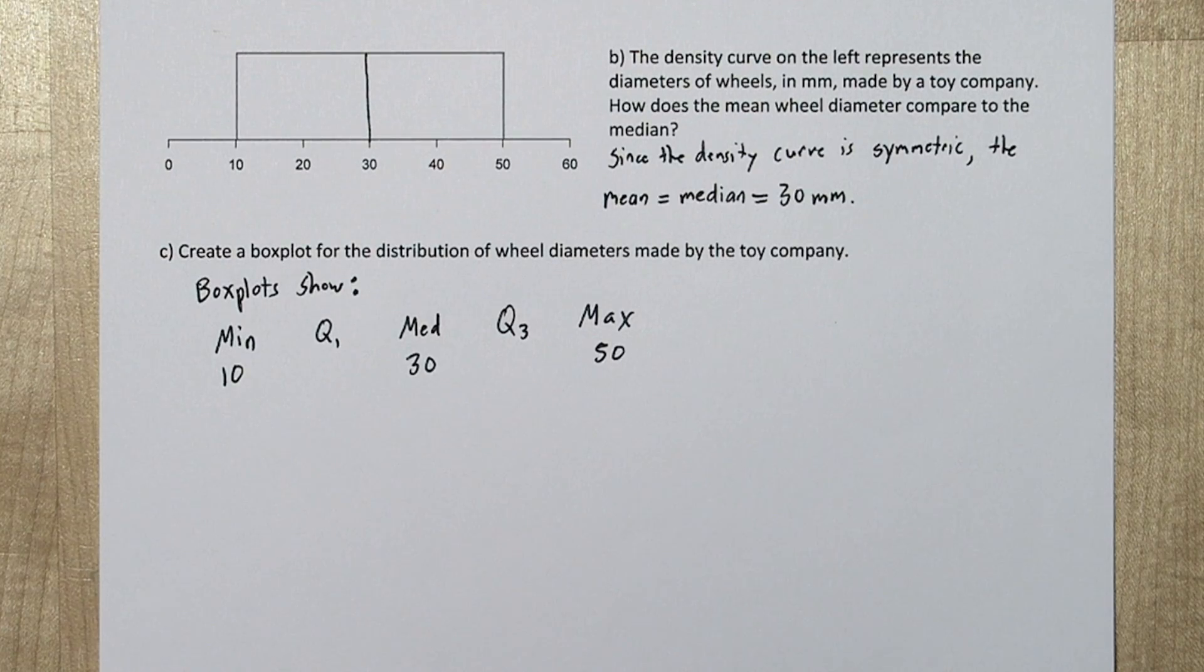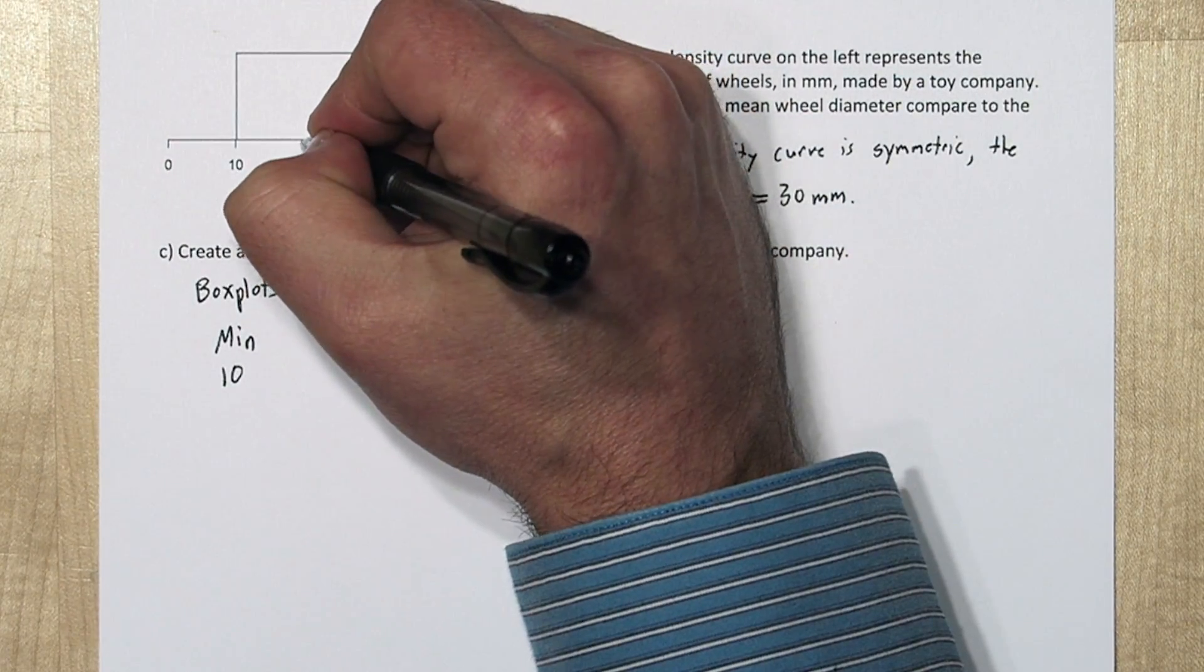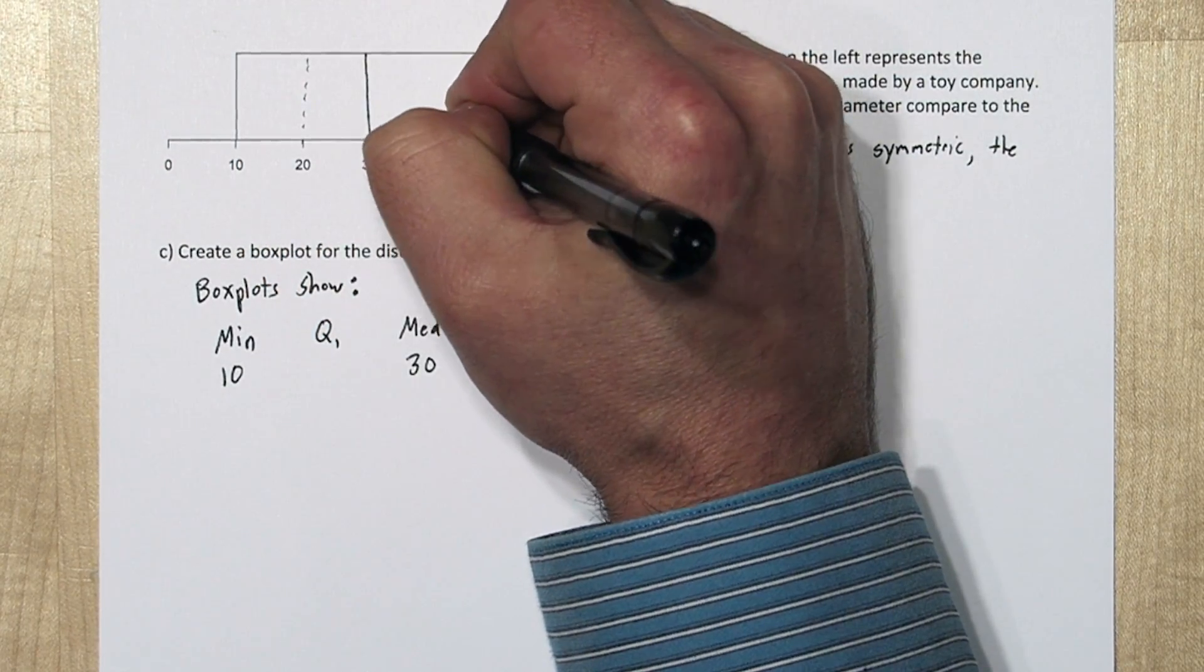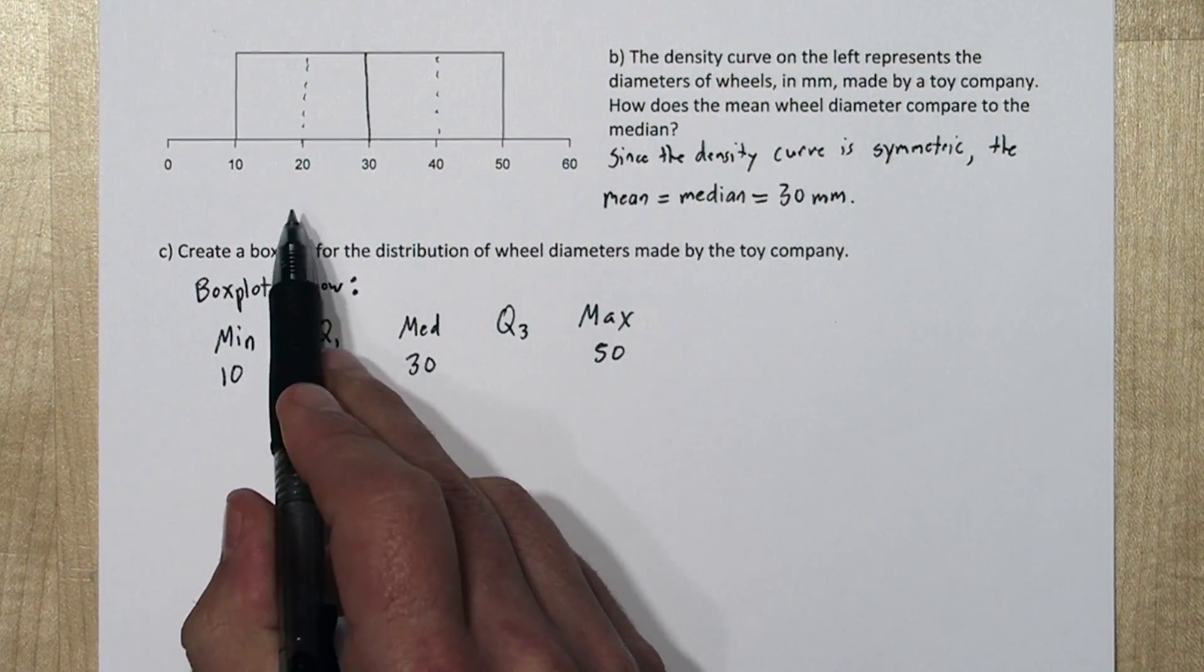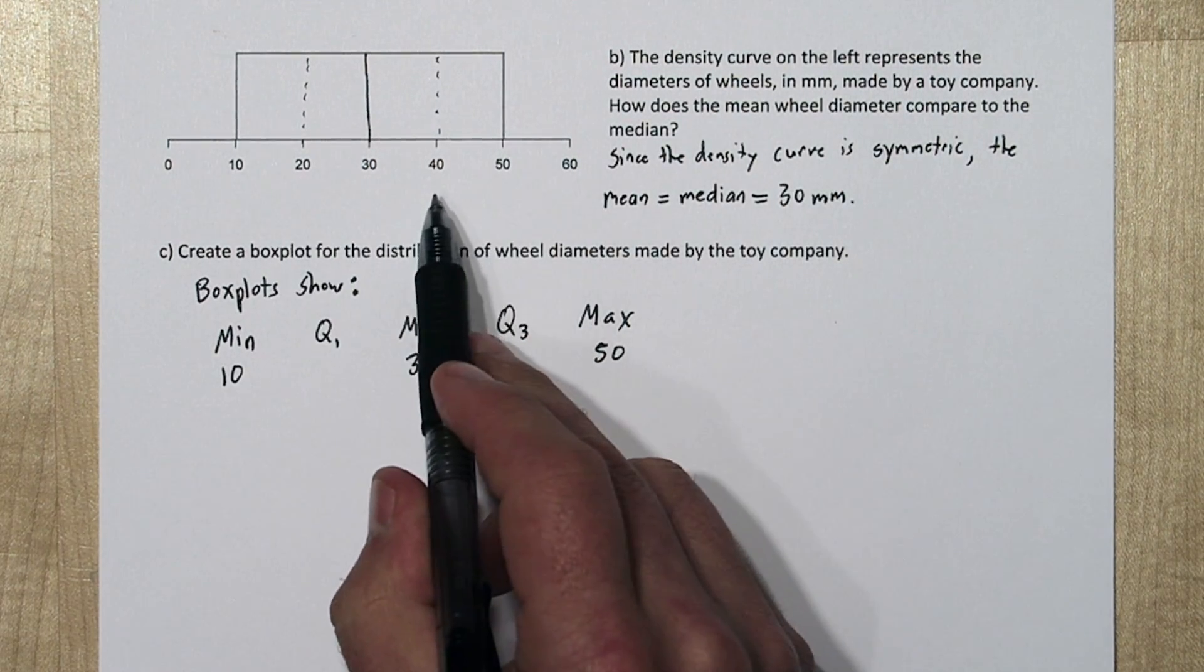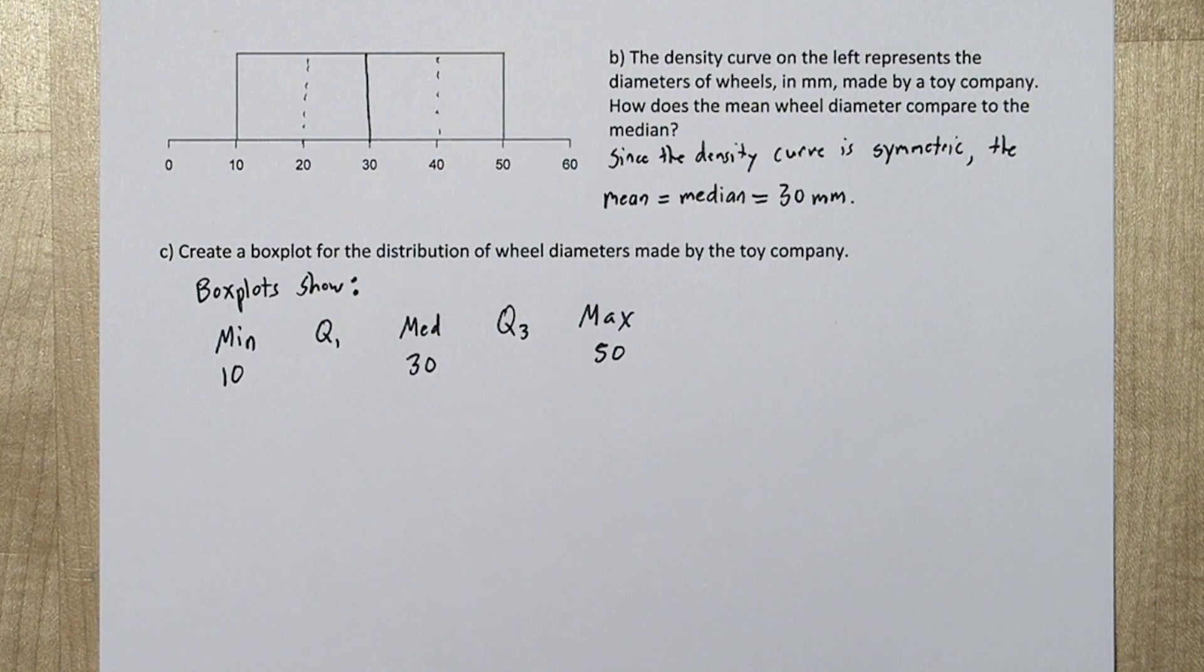50 minus 10 is 40. That means we could divide this pretty easily into four equal parts, the different quadrants. So 20 is quartile 1, and 40 is quartile 3.